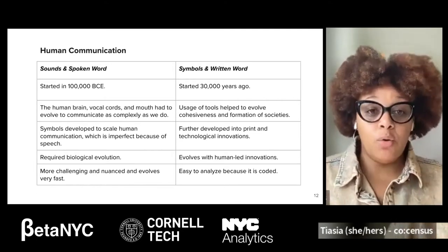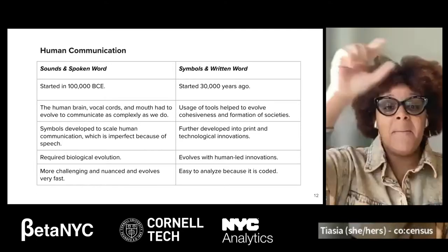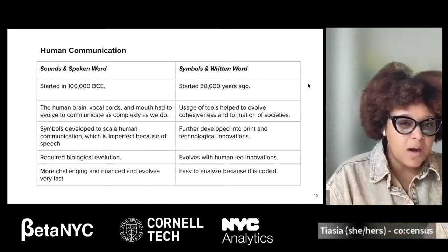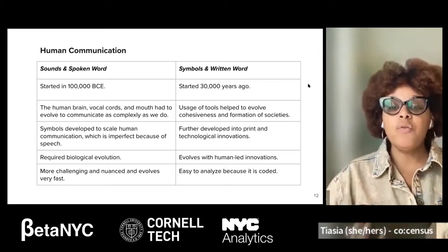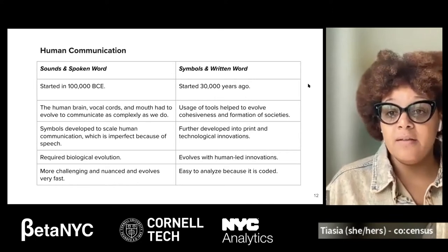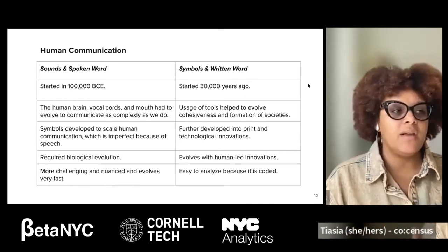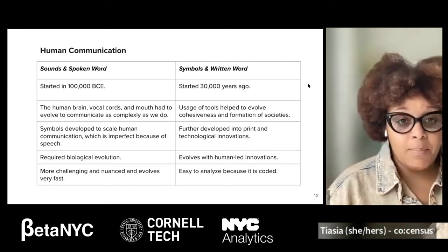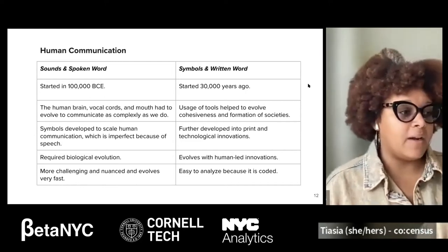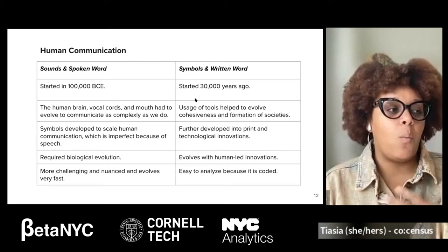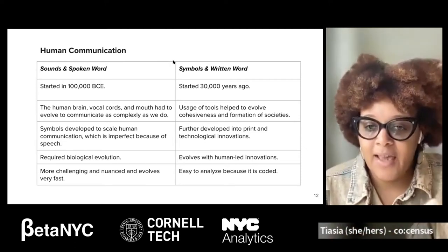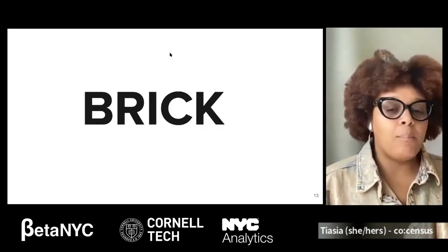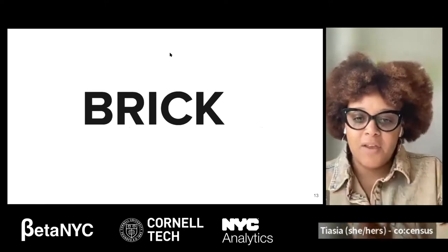Now, the interesting thing is that symbols and written word are coded — they mean specific things, and one word can mean many different things. That makes it very nuanced and complicated to understand a specific experience. When we do the work we do in the public sector, our goal is to understand what the needs of our city, county, region, or state are — which really means understanding what people need, what their experiences are, so we can make our cities better. I'm going to run a little test — I'd love to get engagement in the chat.